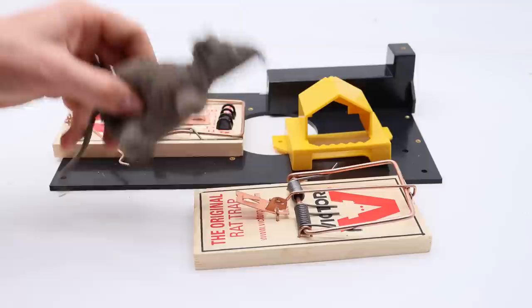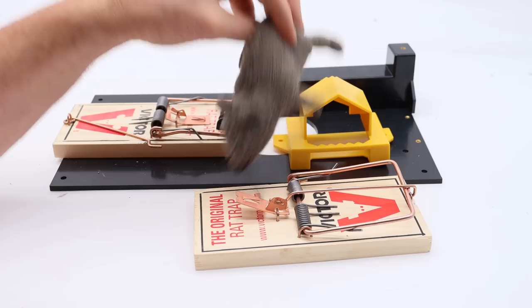Also, sometimes the rat trap is completely gone, it's been carried away, it flips over, or the rat enters from the back, sets it off, goes flying, or is maimed but not killed.